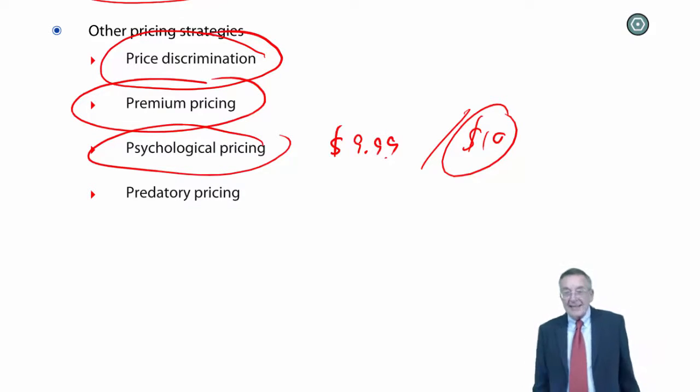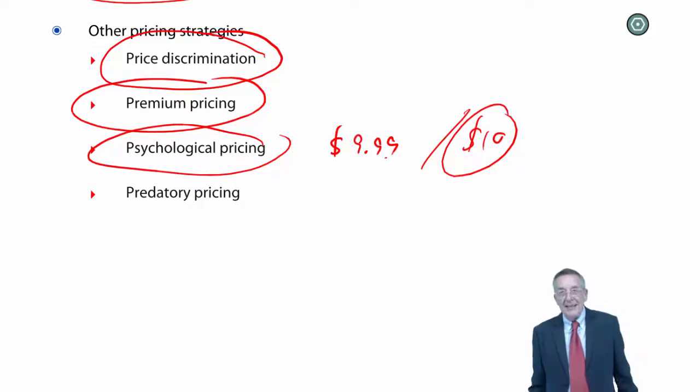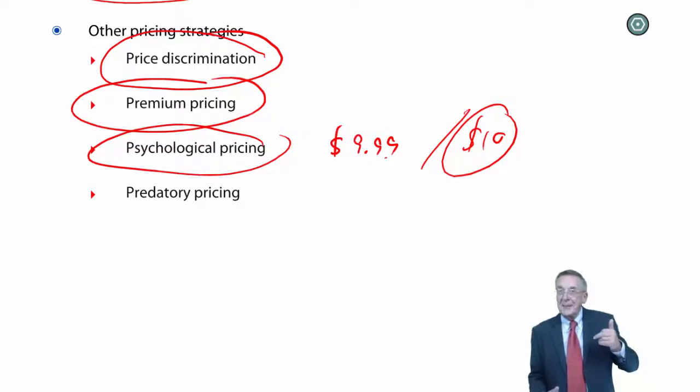People think that $9.99 is cheaper than it actually is. It's the $9 we look at, rather than the 99 cents that comes after it. And it's funny, we all know that happens. We all know why they're doing it, but we still fall for it. $9.99 looks cheaper.